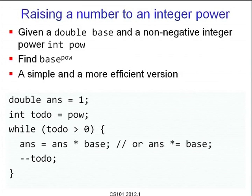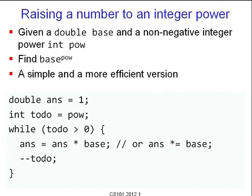Next example: raise a number to an integer power. We are given a double called base and a non-negative integer pow, and we want base to the power pow. For the simple version: initialize 'double answer = 1' and 'todo = pow'. While todo > 0, multiply answer by base — written as 'answer *= base' — and decrement todo with '--todo'.